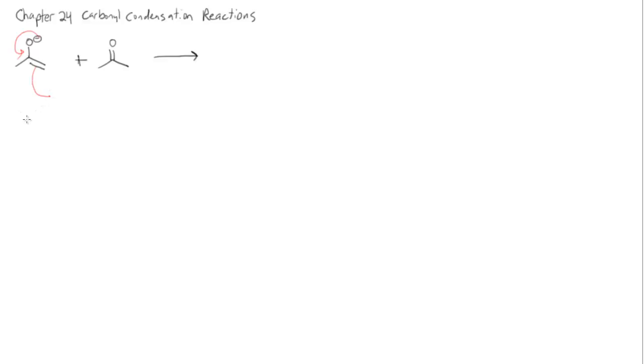So we get back to the standard question that I always ask you, who has electrons and who wants them. Hopefully you can already see that the enolate is going to be who has electrons. So as these electrons come out, this is our nucleophile.